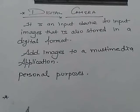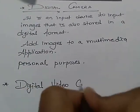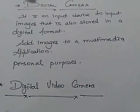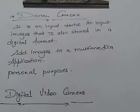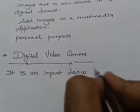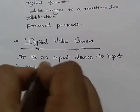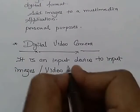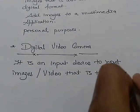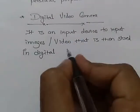The last one is the digital video camera. The digital video camera is an input device to input images or video, which is then stored in digital form.